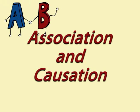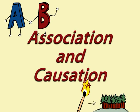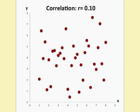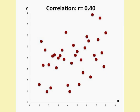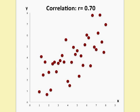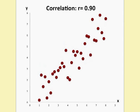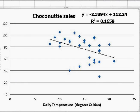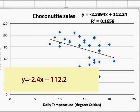Association and causation. When two variables are correlated, it does not mean that one causes the other — it means that there is a linear relationship between the two variables. Similarly, in regression, the equation models the behaviour of the sample. It does not imply causation.